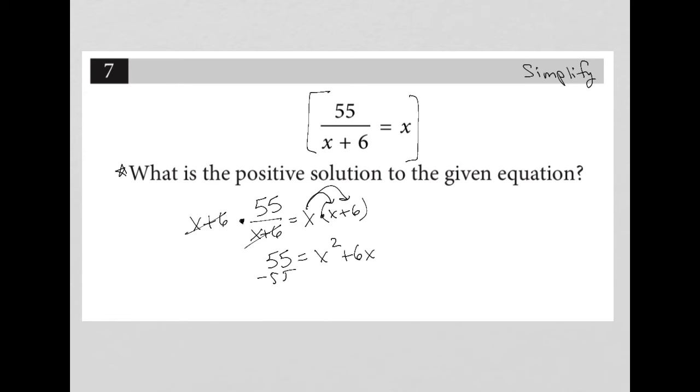I'm going to then subtract 55 from both sides so I can set this equal to zero. I have x squared plus 6x minus 55 equals zero.